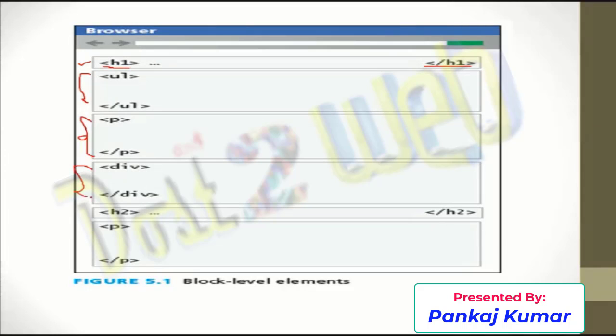Similarly, division tags and h2 tags are also block level elements. Even if you write them on the next line in your code, they are still considered blocks. These elements are called block level elements, and how they display in the browser is your normal flow.